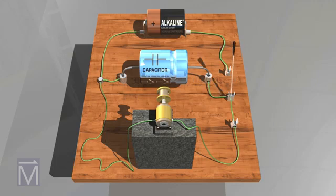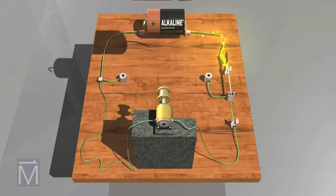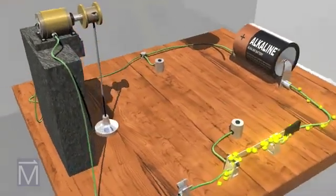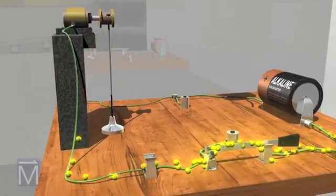When we close the switch, electricity immediately runs throughout the circuit. Although the convention is to think of electrical current as moving from positive to negative, electrons actually move from negative to positive, as we represent here with yellow particles.